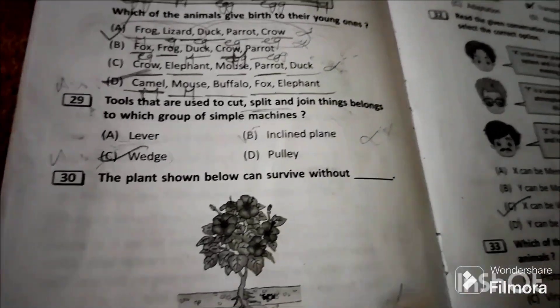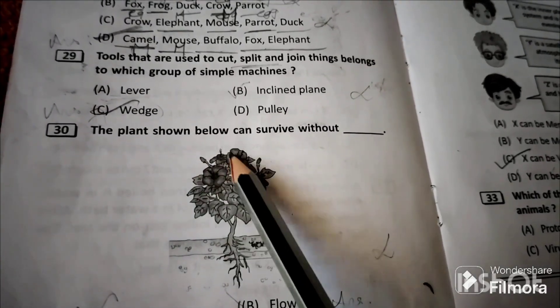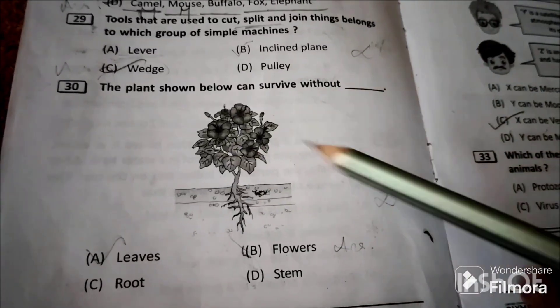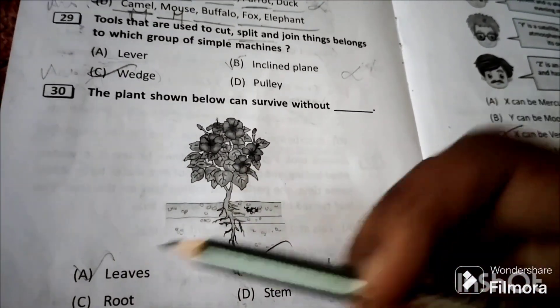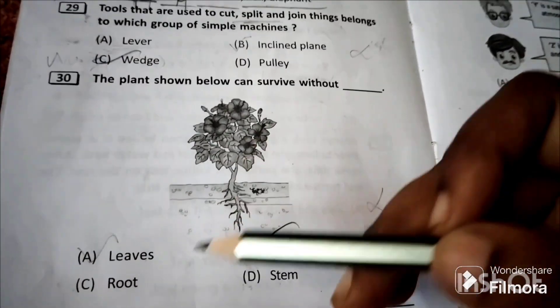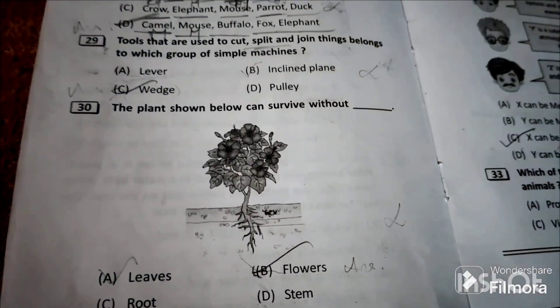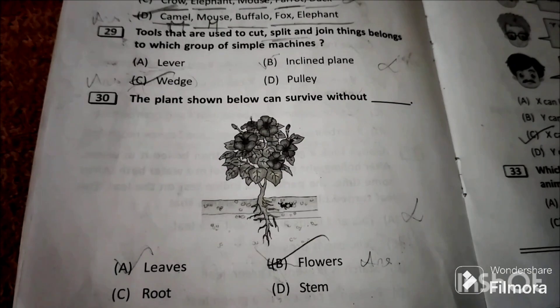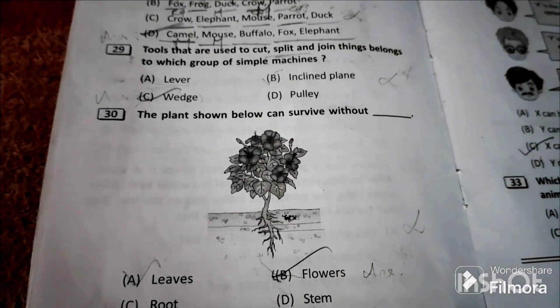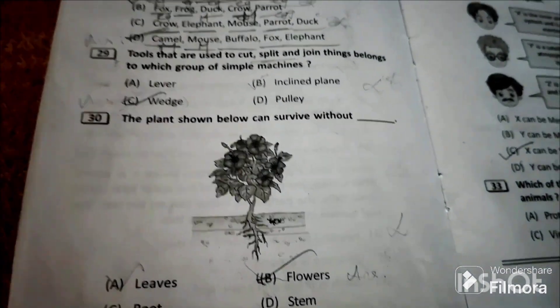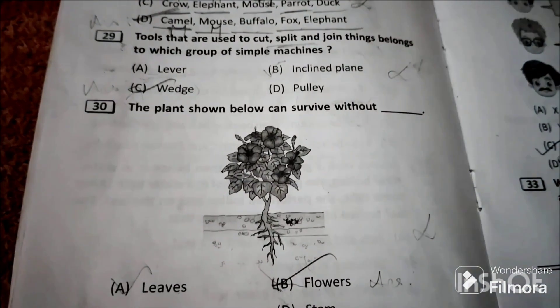Question 30: The plant shown below can survive without... Plants need leaves to prepare food, plants need roots to hold them firmly in the soil and to absorb water, and plants need stem to transport the food, water and minerals.